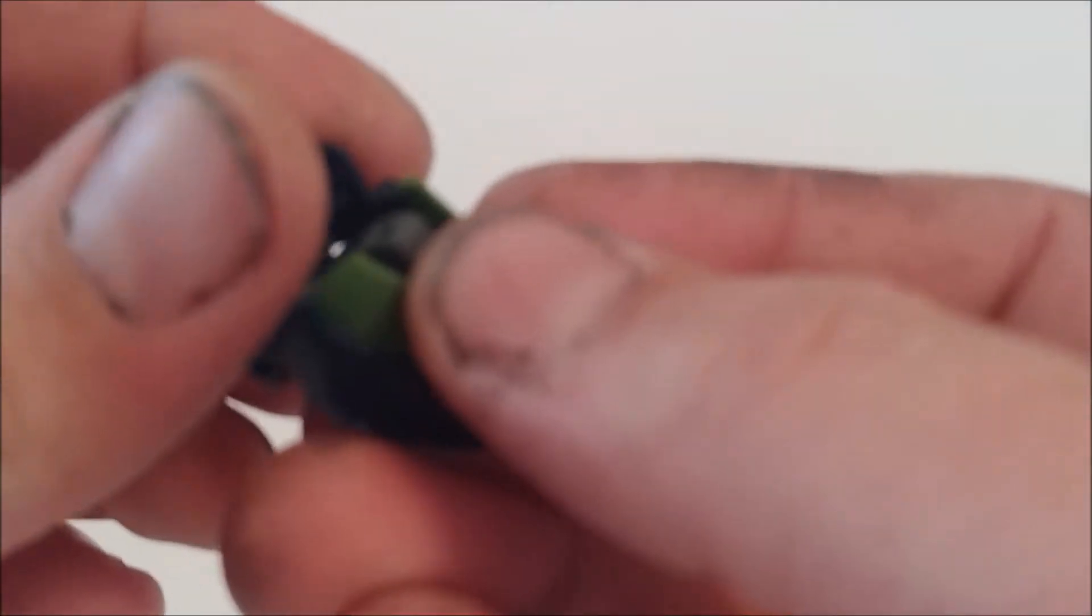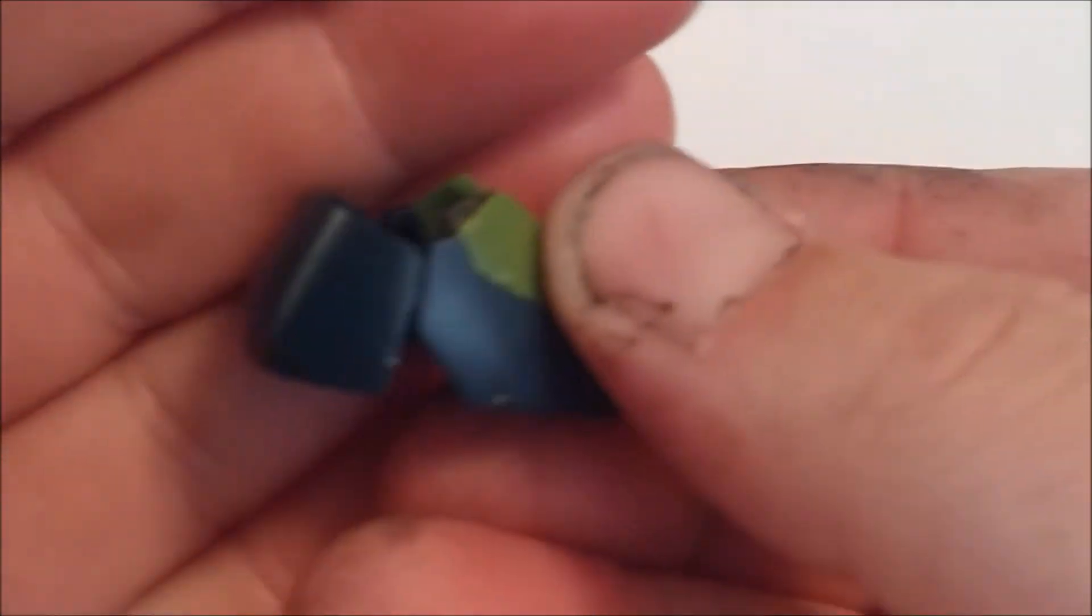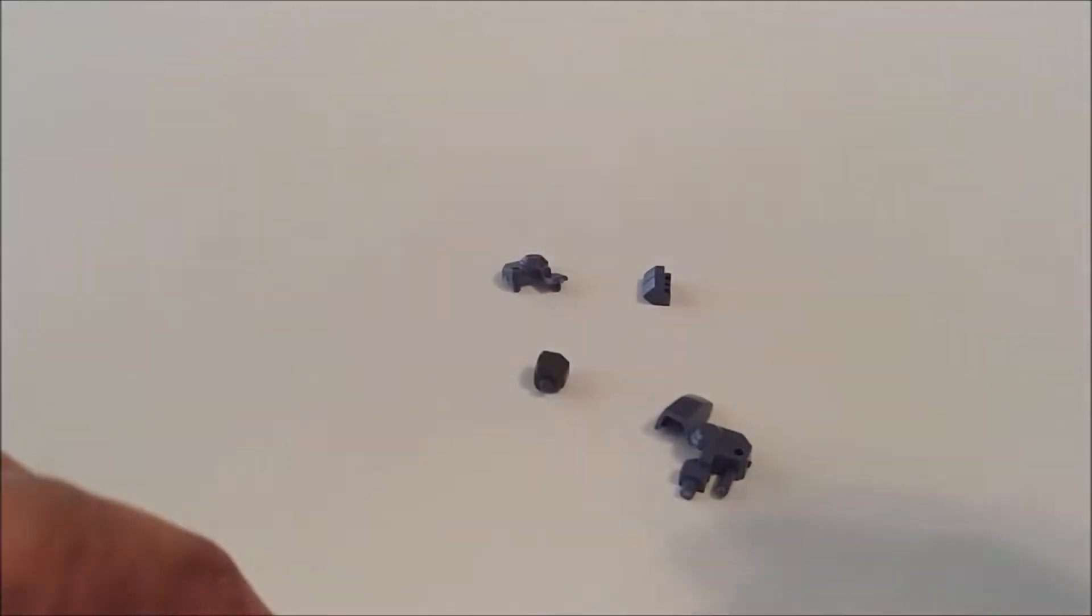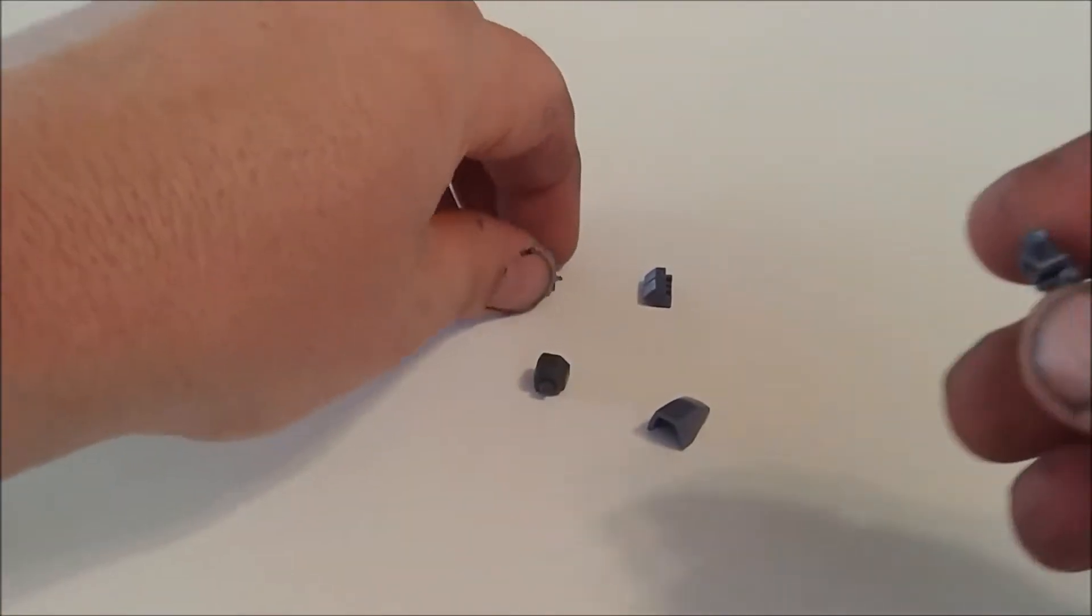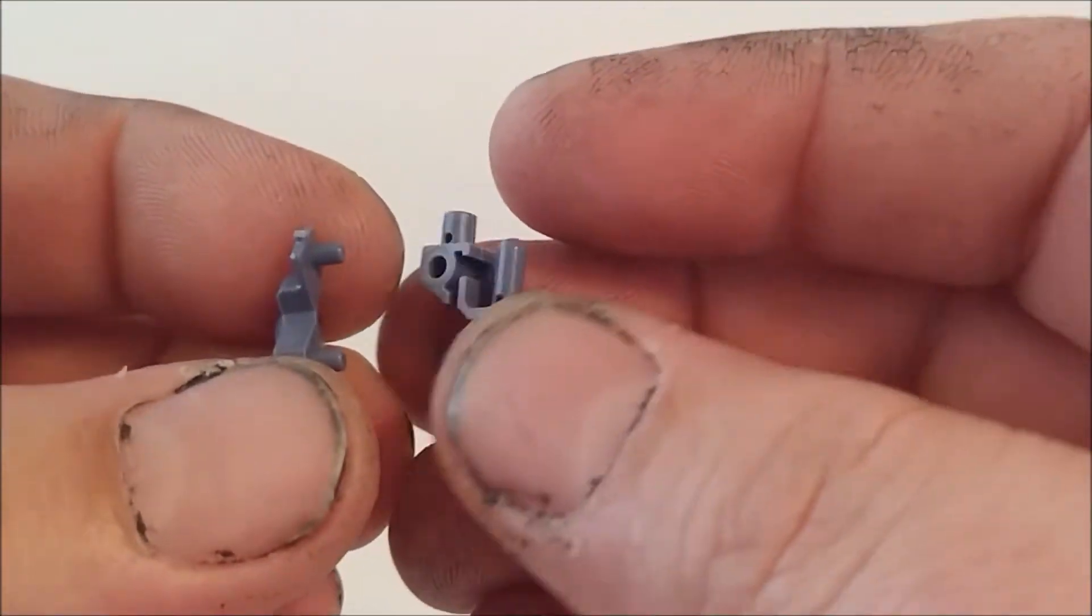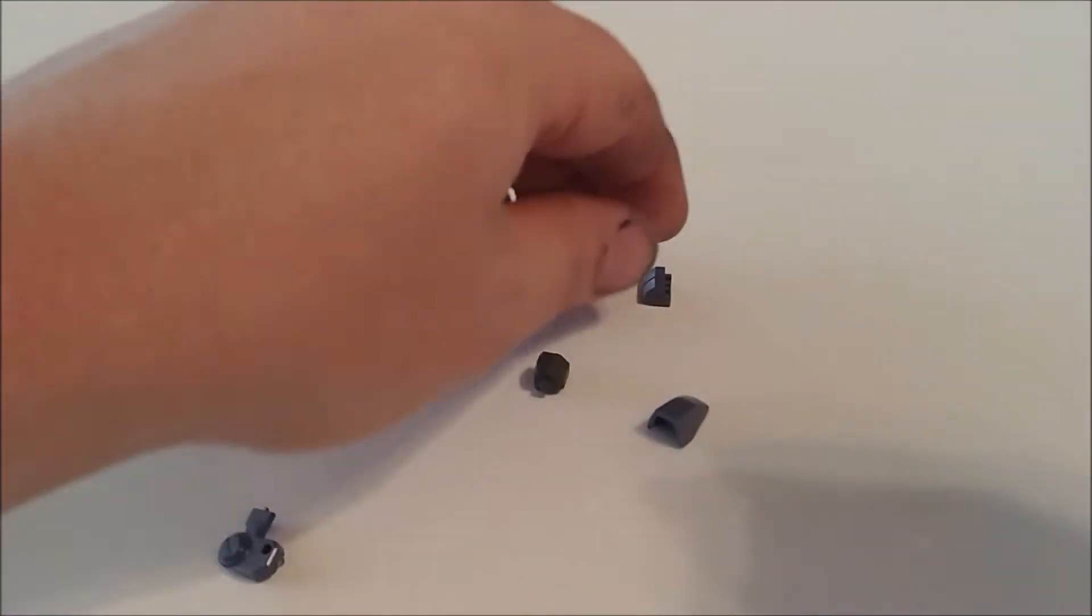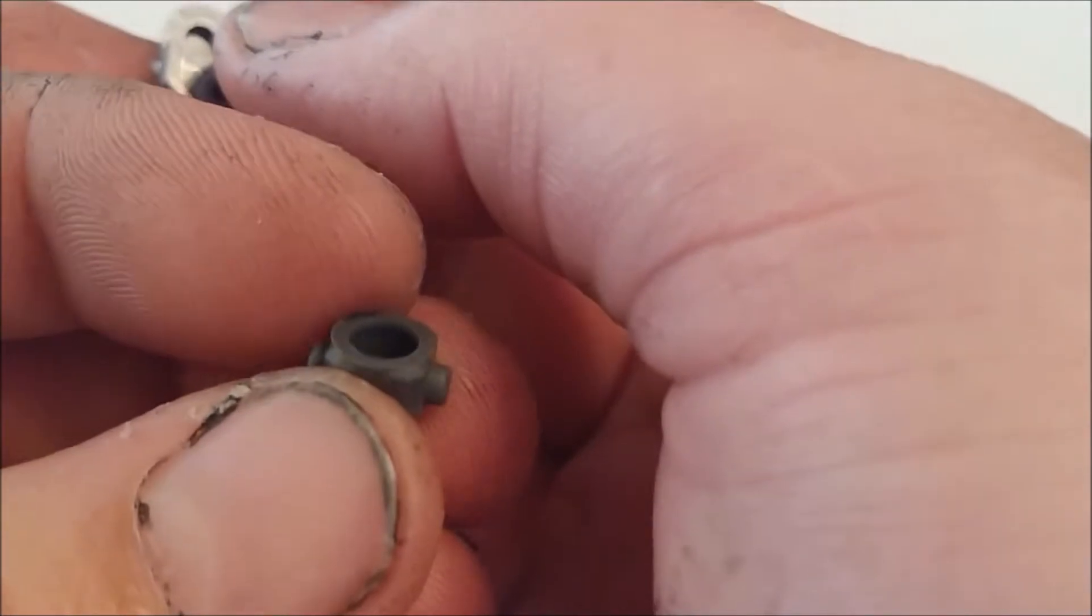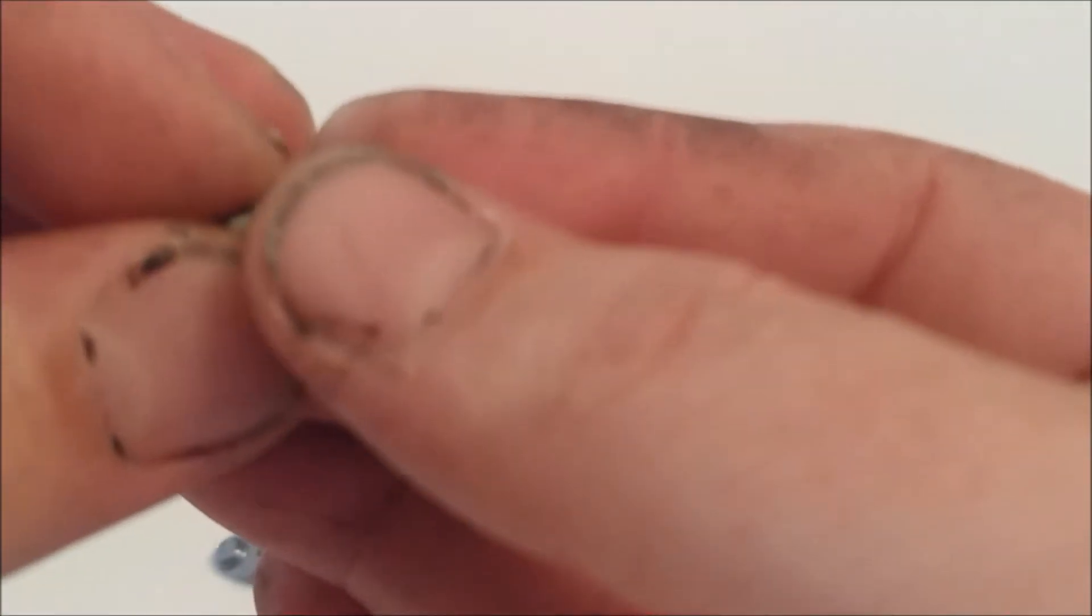And then we got the back of the heel which will go right there. Okay, then we got these two pieces which will be the ankle joint. This gets the ball and the ball caps.